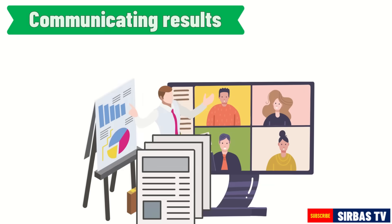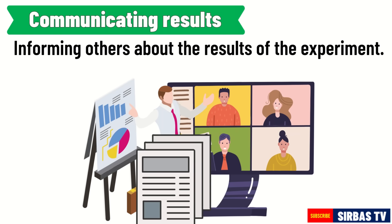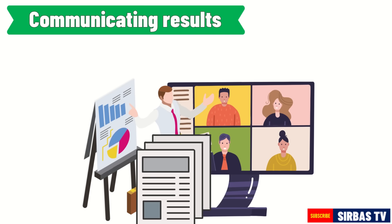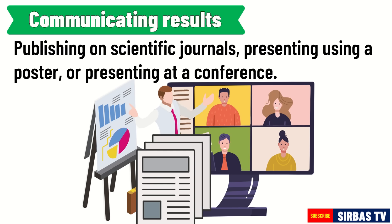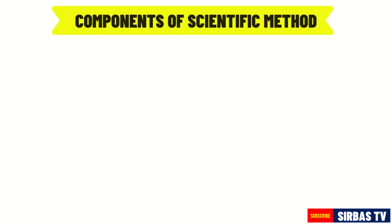After making a conclusion, the next step is to communicate your results. You need to inform others about the result of your experiment. Professional scientists communicate their results by publishing in scientific journals, presenting on a poster, or presenting during a conference. You can also share your findings just like the scientists. And those are the different components of a scientific method.